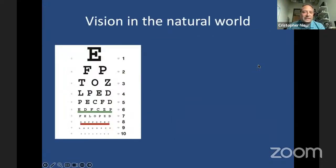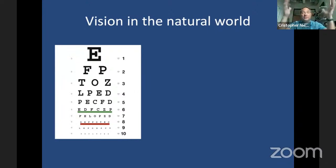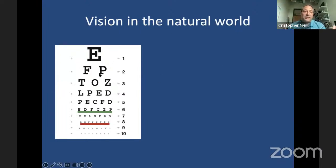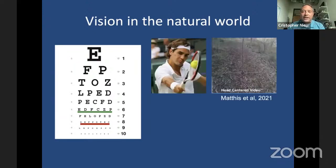When you think about studying vision, or you tell somebody you study vision, they often picture something like an eye exam — a head-fixed subject looking at a two-dimensional screen, analyzing geometric stimuli, making some arbitrary discrimination such as E versus F. But we actually use our vision for much more interesting things out in the real world, like tracking a fast-moving object and intercepting it, such as a tennis ball.